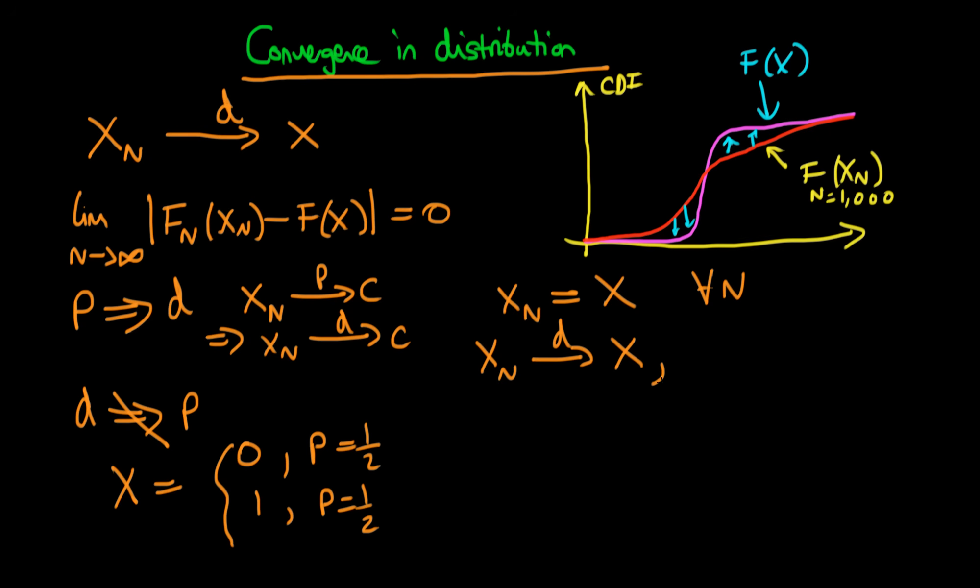Now what I'm going to do is I'm going to define another variable which I'm going to call Y which is just equal to 1 minus X. And if we examine the properties of Y we can see that Y takes on a value of 0 with probability equal to a half and it takes on a value of 1 with probability equal to a half.